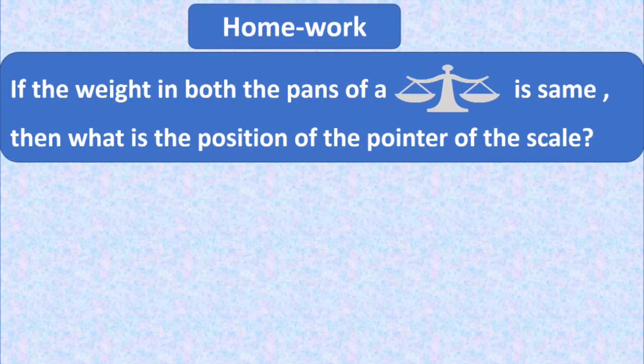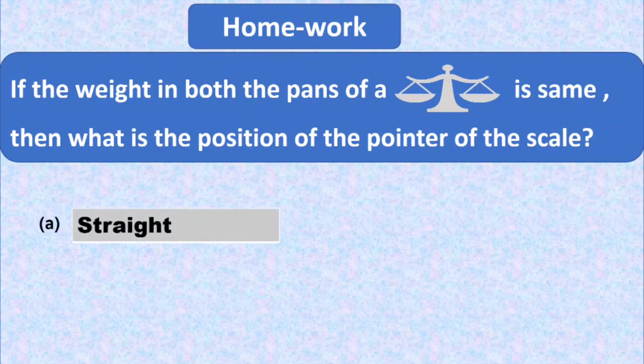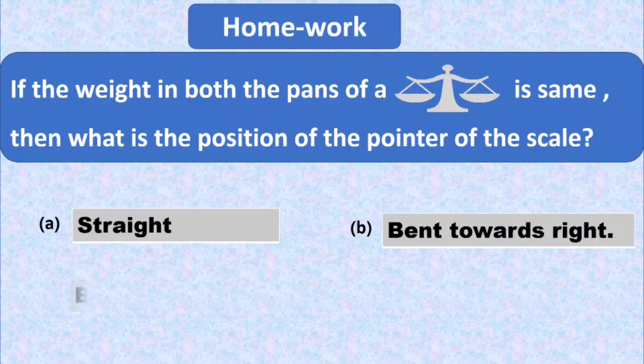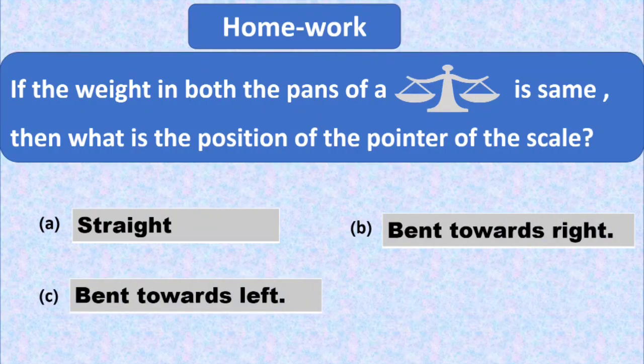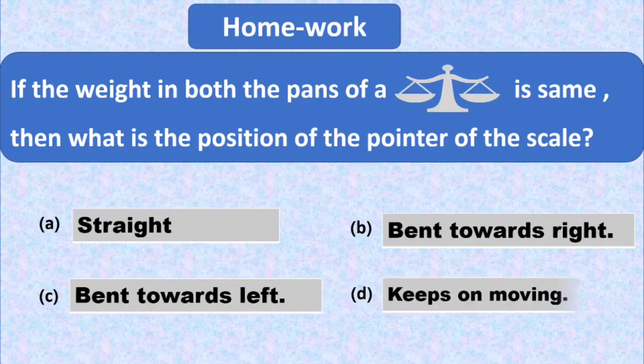It's homework time, kids. As always, you have to revise all these MCQs at home carefully and neatly note them down in your notebooks. We have one more question here: if the weight in both the pans of a balanced scale is the same, then what is the position of the pointer of the scale? The options are: option A is straight, option B is bent towards right, option C is bent towards left, and option D is keeps on moving. Think carefully and tick the right option.